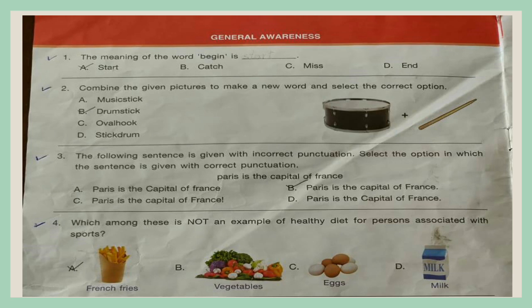Question 2. Combine the given pictures to make a new word and select the correct option. A. Music stick, B. Drum stick, C. Oval hook, D. Stick drum.